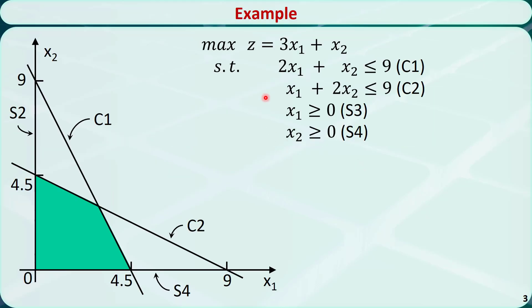Let's check this example. It has two constraints, c1 and c2, and two sign restrictions, s3 and s4.